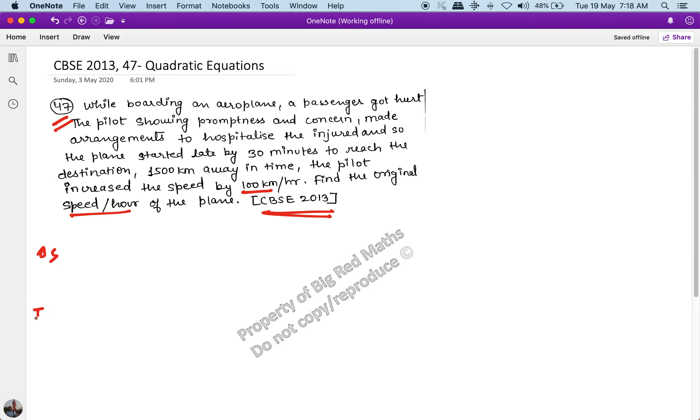So there are two conditions given here. One is original speed and one is increased speed. Original speed, let's say, is x. This x is what we have to find. So the increased speed will be x plus 100 kilometers per hour. It is given in the question. The distance in both the cases is 1500 kilometers here and here also in the second case, distance is 1500 kilometers.